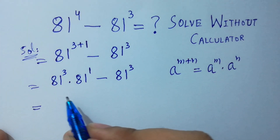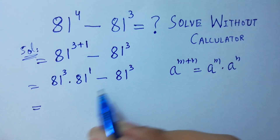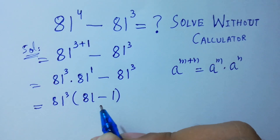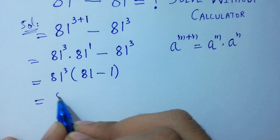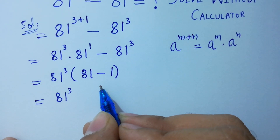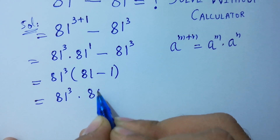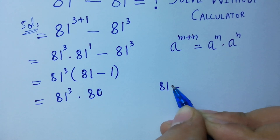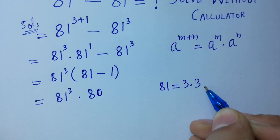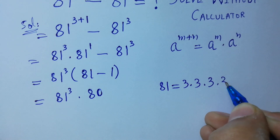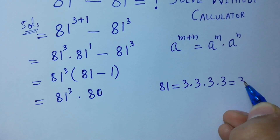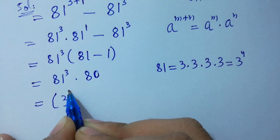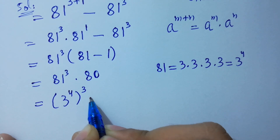Next, 81 cubed is common, so we factor it out: 81 cubed times (81 minus 1), which is 81 cubed times 80. Now, since 81 equals 3 times 3 equals 9, times 3 equals 27, times 3 equals 81, we know 81 equals 3 to the power 4. So this becomes 3 to the power 4, cubed, times 80.